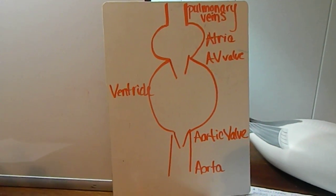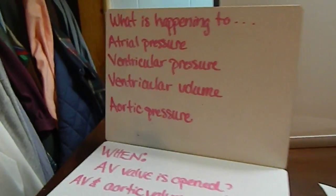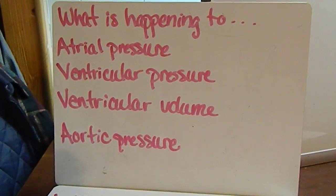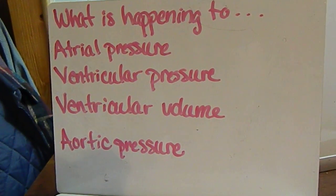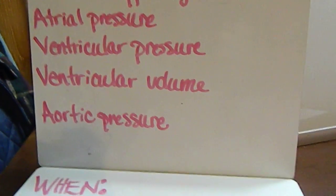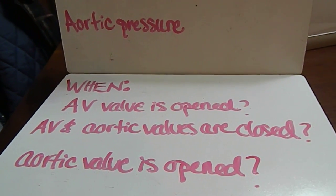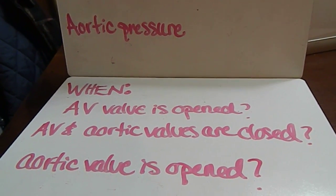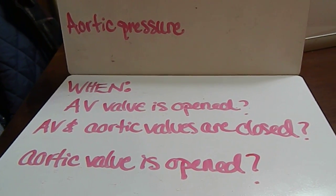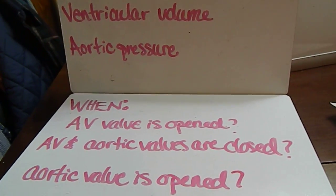You might ask, what type of questions might I have on my exam? Well, let's look at that. What is happening to atrial pressure, ventricular pressure, ventricular volume, aortic pressure when the AV valve is opened, when the AV and aortic valves are closed, and when the aortic valve is open? Those are really tricky questions — how am I ever going to answer that?